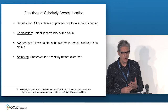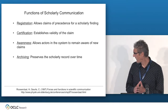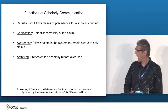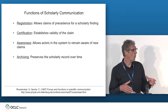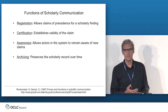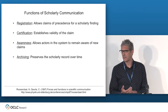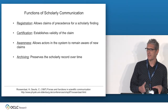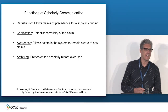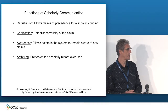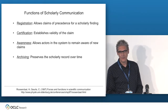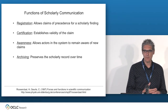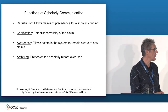Rosendal and Goers wrote a paper in 1997, and others have been thinking along the same lines. They identify what the essential functions of scholarly communication are — irrespective of their implementation, these four things any system of scholarly communication must fulfill. First, registration, which allows claims of precedence of a scholarly finding.